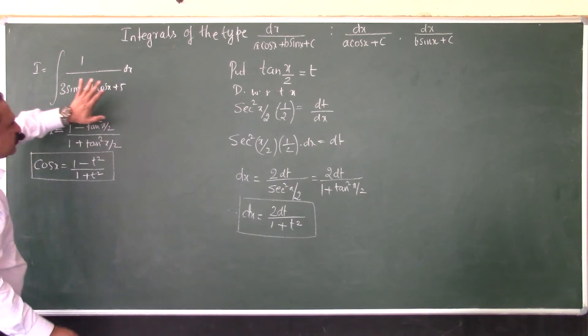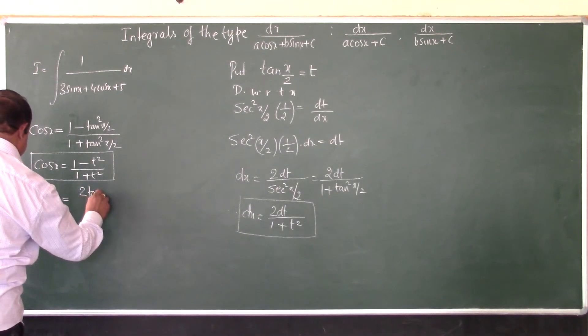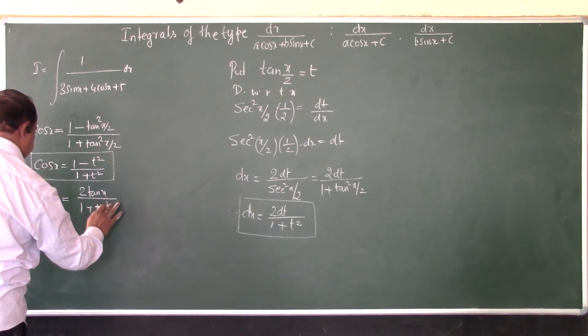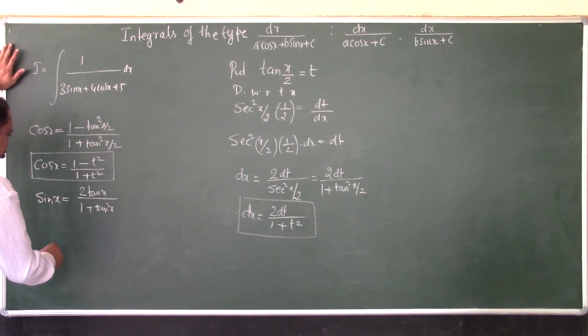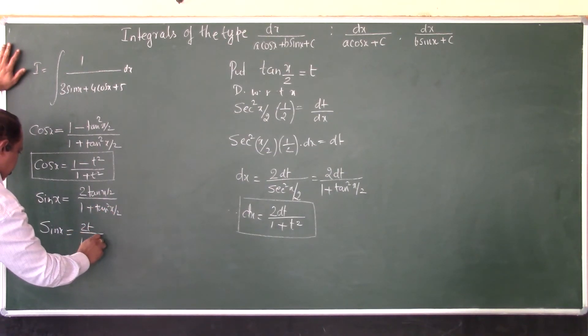From another formula, we know that sin x equals 2tan(x/2)/(1 + tan²(x/2)), or it can be 2tan(x/2)/(1 + tan²(x/2)). So sin x is replaced by 2t/(1 + t²).